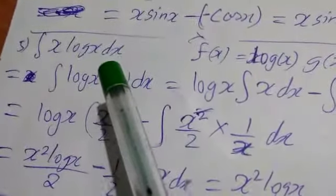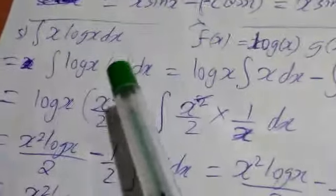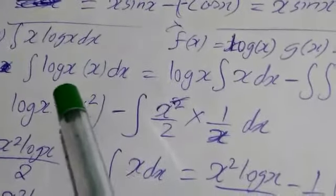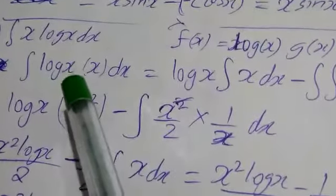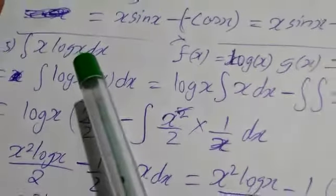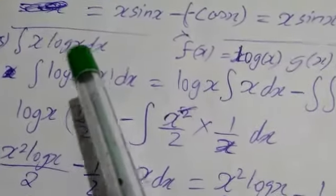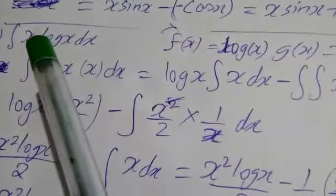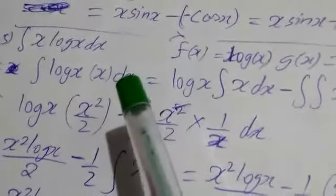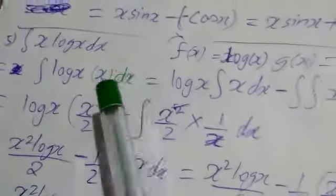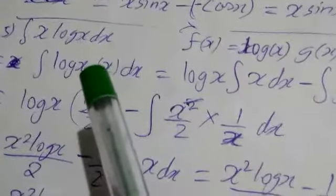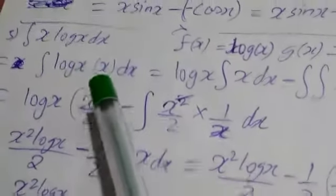The fifth problem is: integration of x log x. Here I have taken log x as the first term. Because integration of log x — we don't have a formula for it. If I take the first term as x, d by dx of x will become 1, no doubt, but integration of log x we don't have a formula. That's why we are taking log x as the first term.